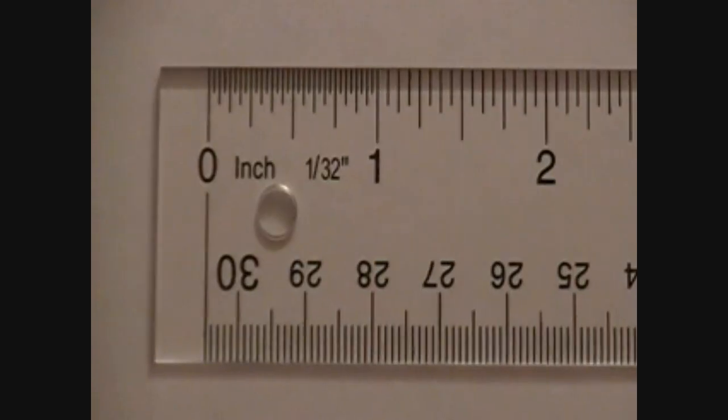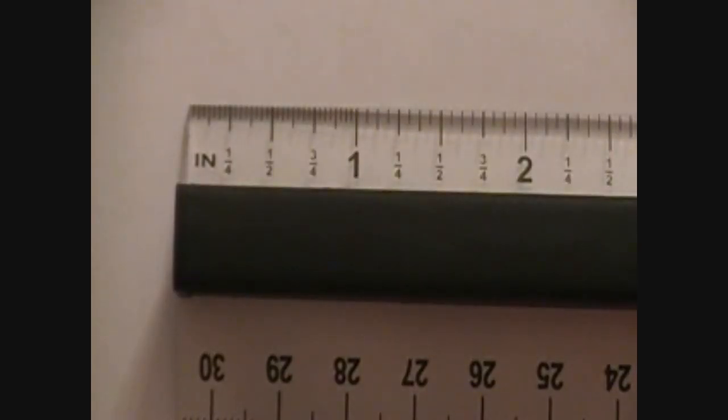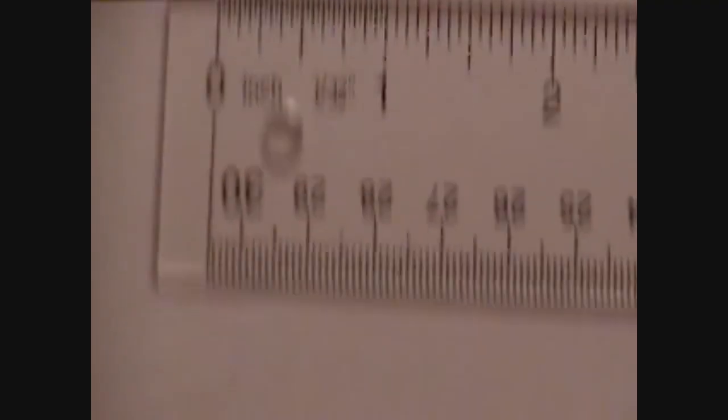On some rulers that some of you may have bought at a store or brought from home, you might not have that space, like this ruler. This ruler starts right away with the 0. There is no empty space in the beginning, so you need to make sure that you know what your ruler has. If there's no empty space, start at the beginning. If there is an empty space, make sure you start at the 0.